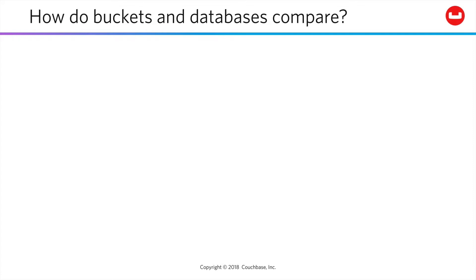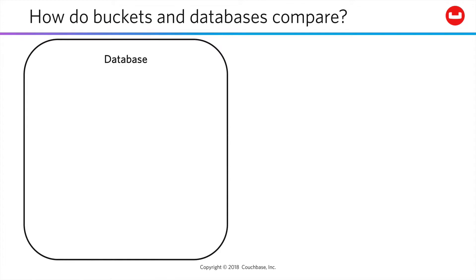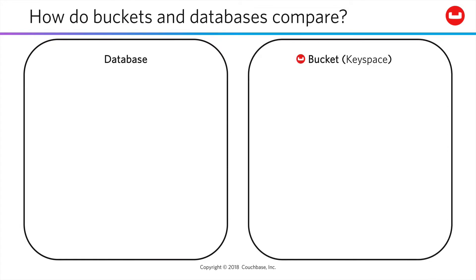We assume people taking this course have some relational database experience. Relational and document databases are not necessarily as different as you might think, even though the top-level containers are somewhat different and the data model underlying them is different. In relational systems, that top-level container is an individual database. In Couchbase, it's what we call a bucket. A bucket is an unstructured document container, perhaps more easily thought of as a key space, because the hard physical limits are intentionally few.